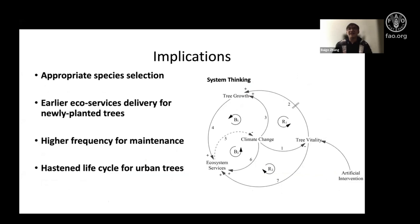At last, we use system thinking to get some implications for future urban forestry. The first one is appropriate species selection is quite important for future urban forest management, because as we have shown, some species can even benefit from climate change with warmer temperatures and grow faster, but others are more vulnerable to changing conditions.